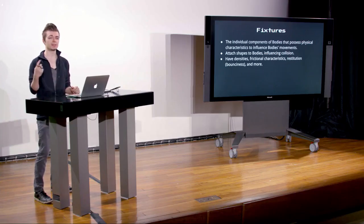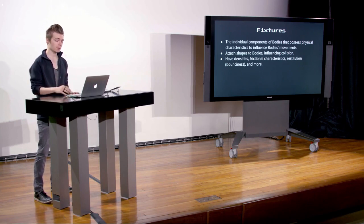Fixtures, in addition to attaching shapes to bodies, have density — things with higher density will push others farther when they collide, as if they have more weight. They also have friction and restitution. Restitution is bounciness. With no restitution, when our alien hits the ground it falls flat. With higher restitution, it actually bounces when it hits the ground and interacts with the world differently.